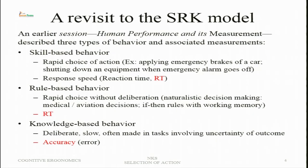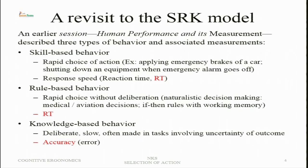Revisiting the SRK model, there are three kinds of behaviours: skill-based, knowledge-based, and rule-based. Skill-based behaviours are primarily highly automated — skills are very proficient performances where a rapid choice of action is important. As soon as there is a situation, take an action immediately; no deliberate decision is involved, and therefore the speed with which the action can be implemented is very fast.